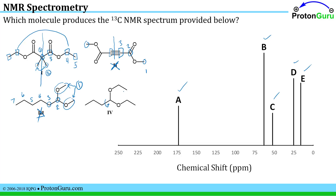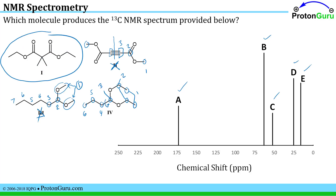Now I can rotate around here and interconvert the two ethyl groups so that they're the same as each other. So those two methyl groups would give me one signal, the two CH2 groups a second signal, this carbon a third signal, then a fourth, fifth, sixth signal. So none of these compounds other than compound 1 would give me the correct number of signals in the carbon NMR spectrum. Compound 1 is the correct answer for this problem.